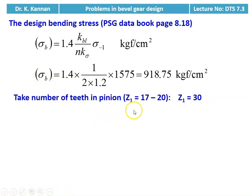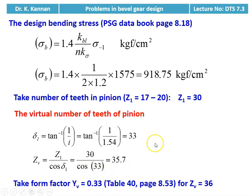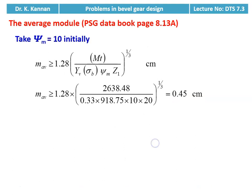We take number of teeth in pinion. Normally we take 17 to 20, but in this problem it is given as 30, so Z1 = 30. Virtual number of teeth: delta_1 = tan⁻¹(1/i) = tan⁻¹(1/1.54) = 33°. Zv = Z1 / cos(delta_1) = 30 / cos(33°) = 35.7. We take the form factor Yb = 0.33 for Zv = 36 from table 40, page 8.53. We take psi_m = 10. Average module ≥ 1.28 × MT(design) / (Yv × sigma_b × psi_m × Z1^(1/3)) = 1.28 × 2638.48 / (0.33 × 918.75 × 10 × 30^(1/3)) = 0.39 centimeter.